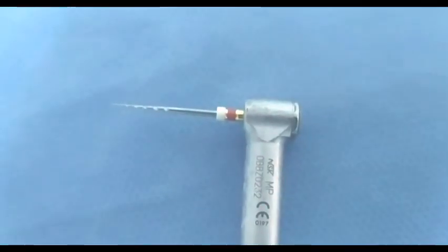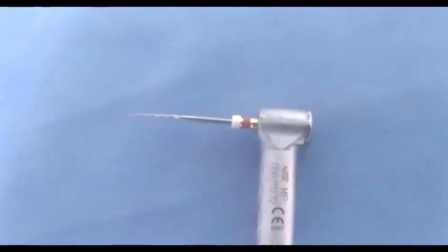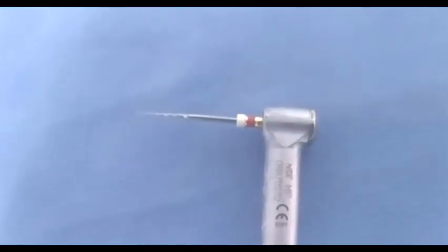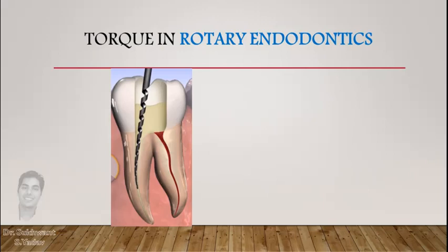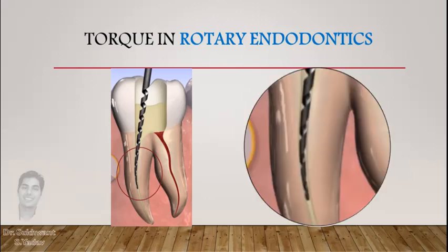Torque is basically the force generated by a rotating object. During biomechanical preparation, when a file is rotated in root canals, it generates a force on dentinal walls. In return, it faces resistance by the dentinal walls — that is called torque. It varies from narrow to wide canals.